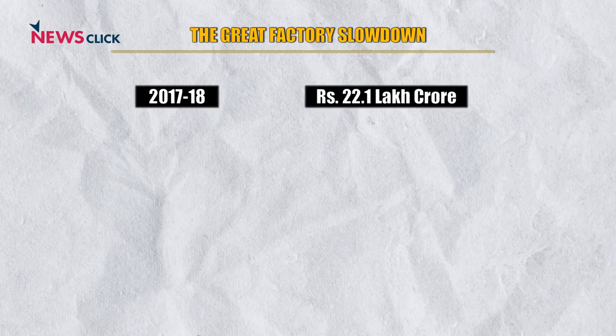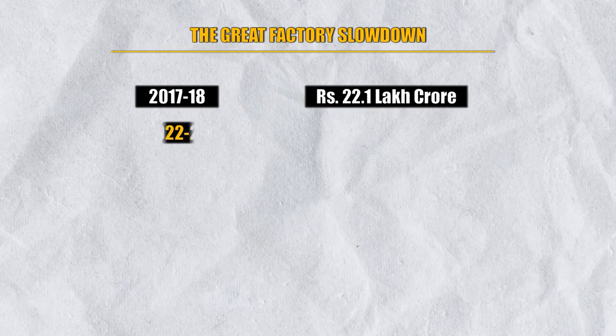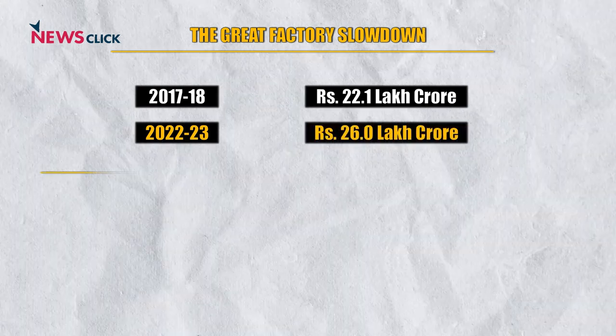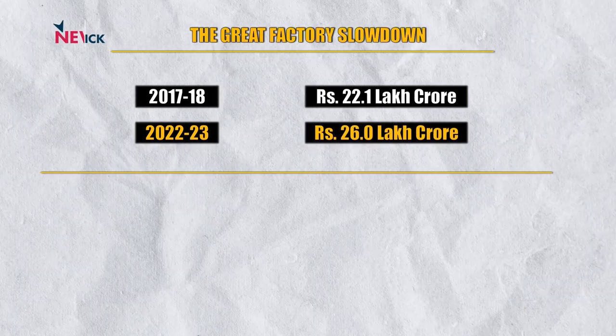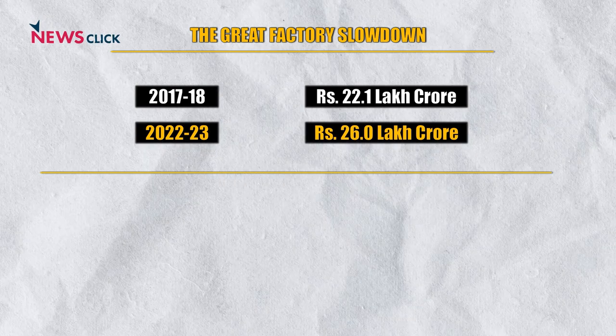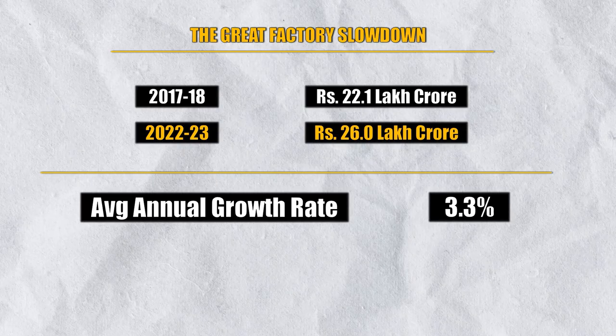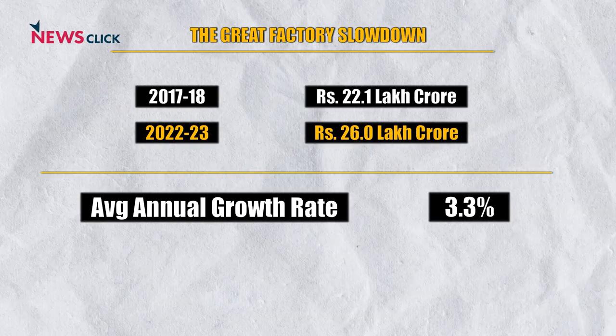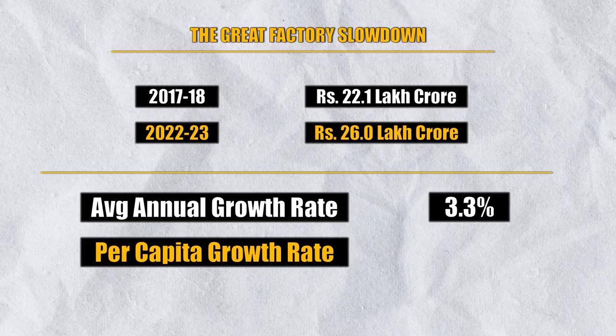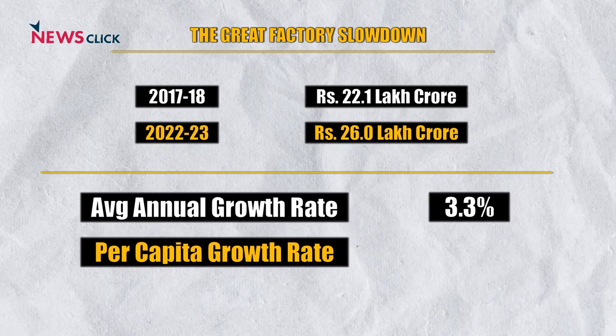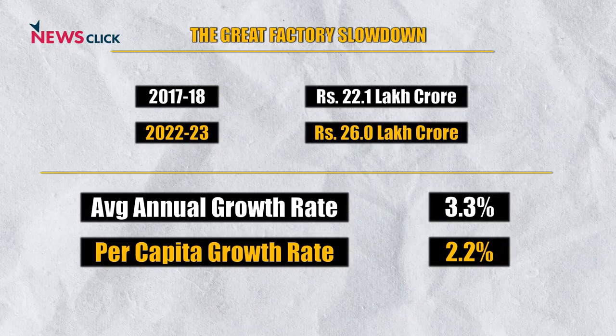Looking at the past five years from 2017-18 to 2022-23: in 2017-18 the manufacturing sector produced goods worth a little over 22 lakh crore rupees, and in 2022-23 this is expected to reach just under 26 lakh crore — real growth adjusted for inflation. That works out to an annual growth rate of just 3.3% per year, well below the average during the pre-liberalisation period. In per capita terms, the growth rate is just 2.2% per year.